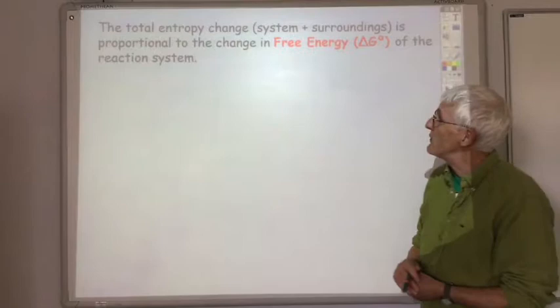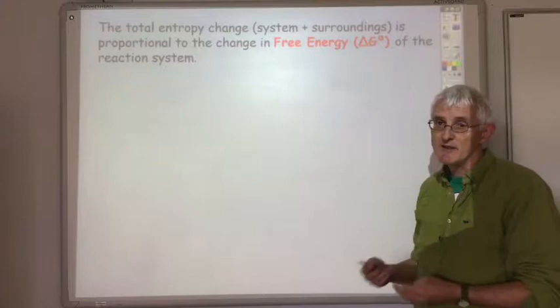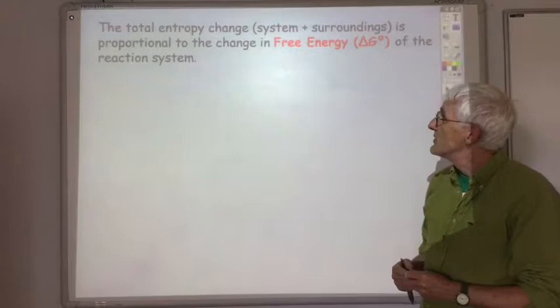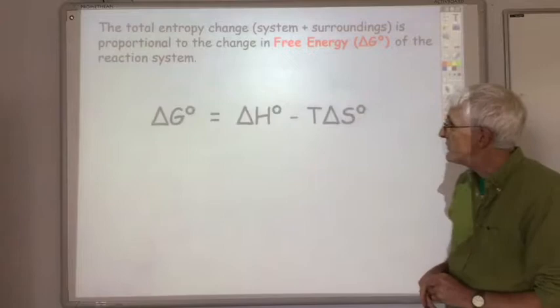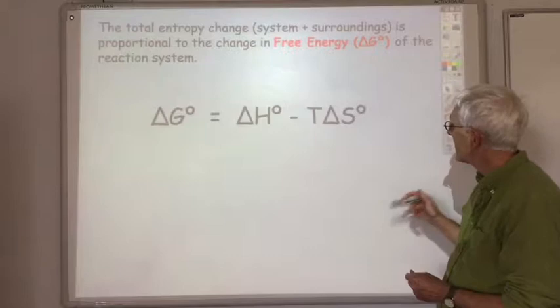The total entropy change of the reaction system and its surroundings is proportional to something called the free energy, given the symbol delta G. Until recently we called it the Gibbs free energy — which is where the G came from — but it's now just called free energy. You'll find this equation in your data booklet.